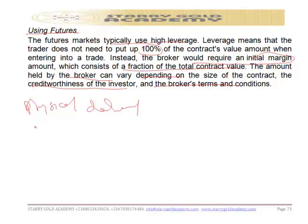The exchange determines whether the futures contract is for physical delivery — where the asset is physically delivered — or cash settlement. A corporation may enter into physical delivery contracts to lock in the price of a commodity they need for production. However, most futures contracts are from traders who speculate or hedge, and these contracts are closed out or netted, with the difference between the original trade and closing trade price known as a cash settlement.